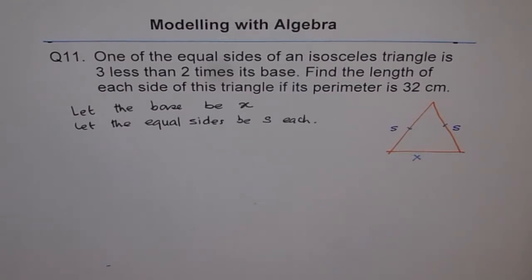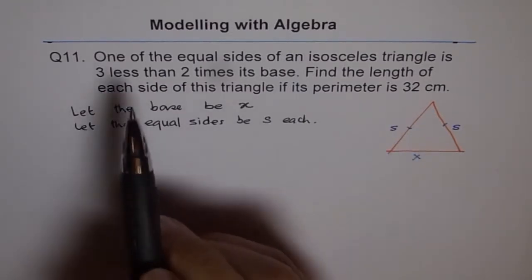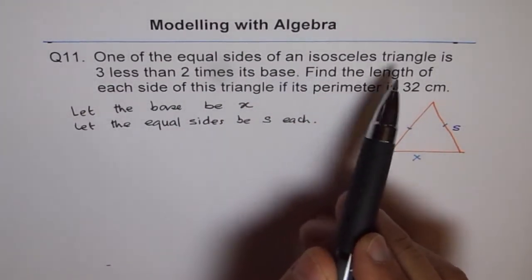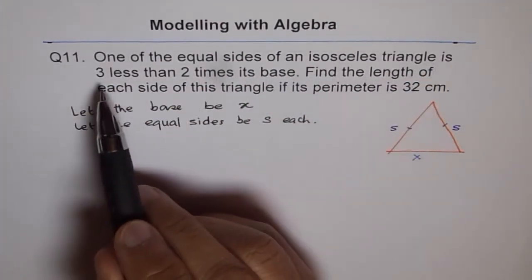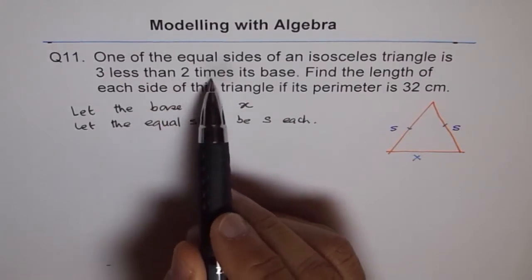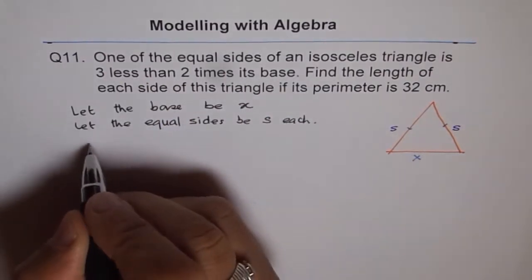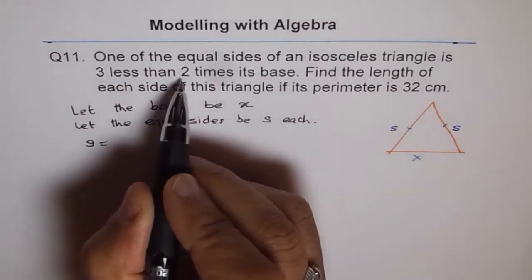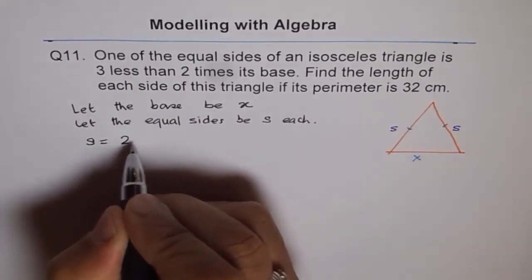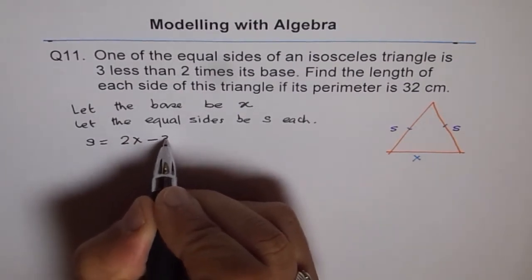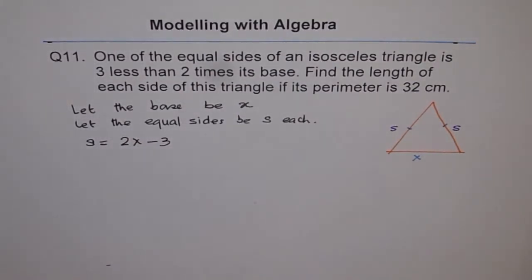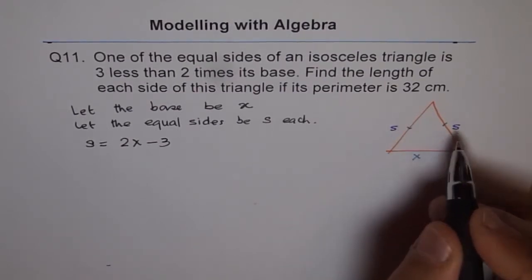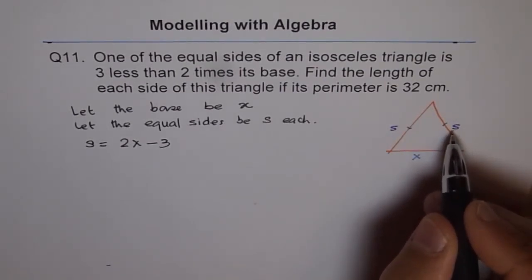Now how are these things related? One of the equal sides of an isosceles triangle is 3 less than 2 times its base. That means s is 3 less than 2 times. So we write 2 times first: 2x minus 3. That is what side is. So if this is x, this side is 2x minus 3 and this side is also 2x minus 3.